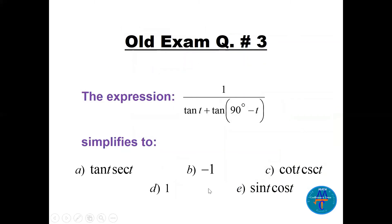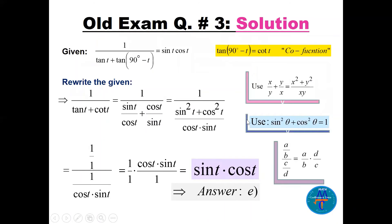Question number three: simplify 1 over [tan(t) + tan(90° - t)]. Using the co-function identity, tan(90° - t) = cot(t). So the expression becomes 1 over [tan(t) + cot(t)]. Writing tan(t) = sin(t)/cos(t) and cot(t) = cos(t)/sin(t), I add these fractions using LCD.